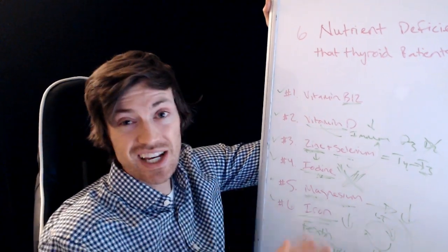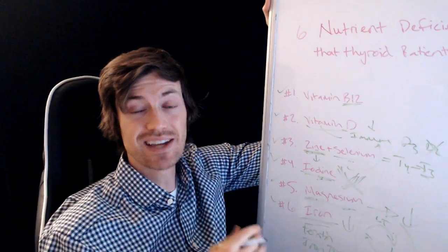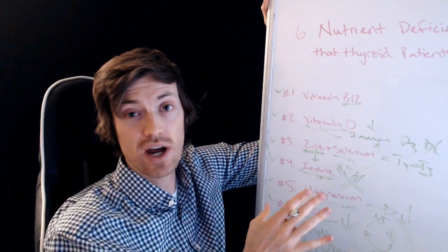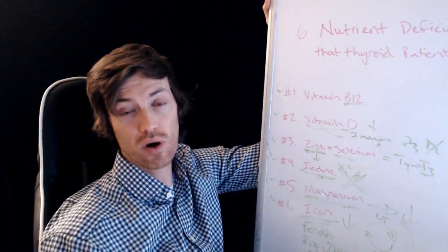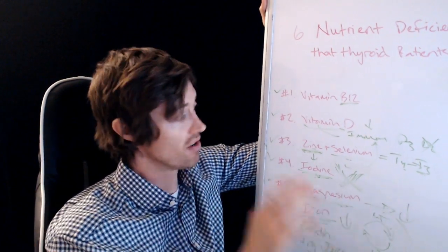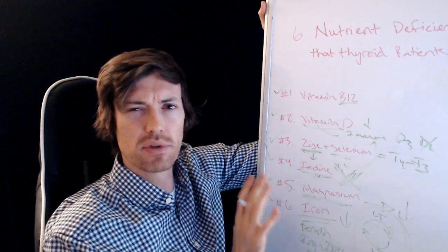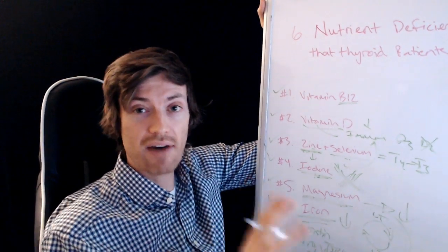So these are six things, six nutrients that I see that thyroid patients are commonly deficient in. And these things, if they're not addressed, can keep your thyroid function low, even if you are taking thyroid medication. So remember this, they're very, very important. Yes, there are more. I'll probably have to do a part two, but I would say these are probably the most common.